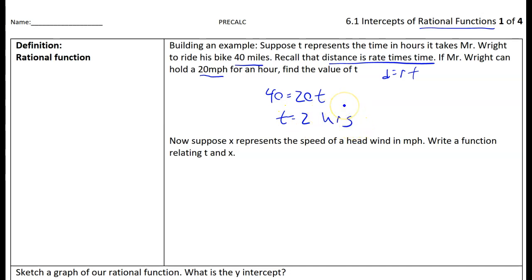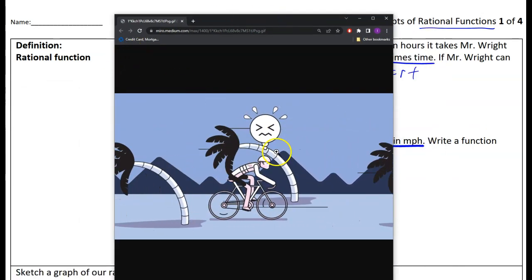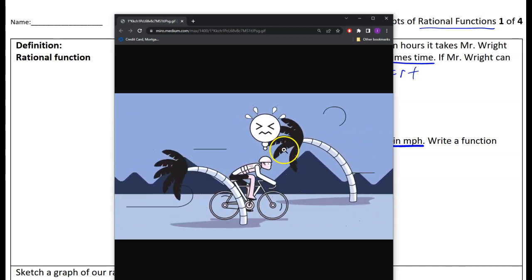A rational function is going to allow us to model a slightly more complicated situation. Now x in this example is going to be the speed of a headwind. A headwind means you're riding into the wind. Obviously riding into the wind makes it harder and slows you down.